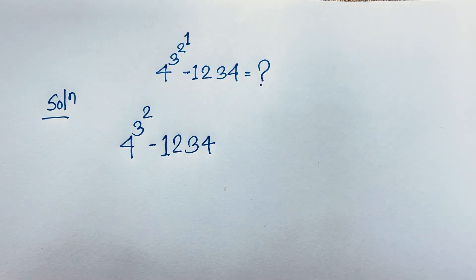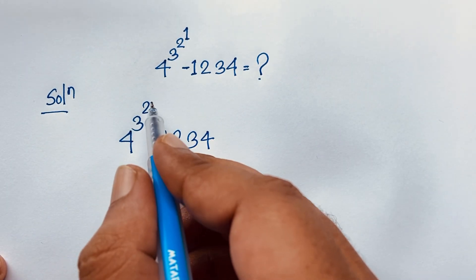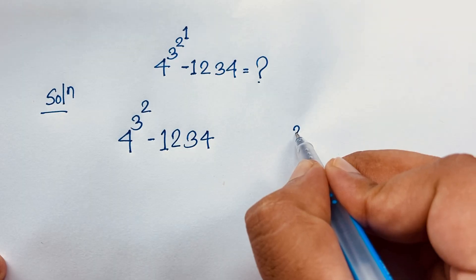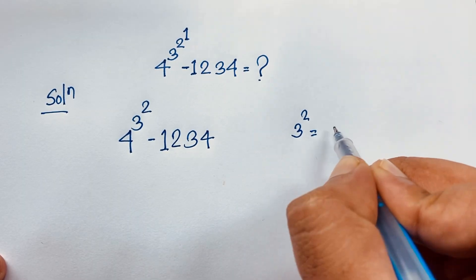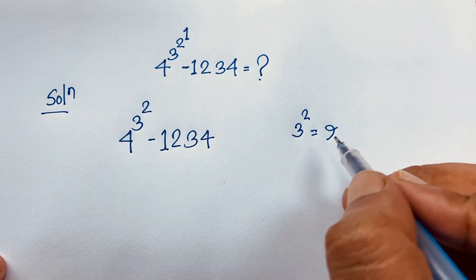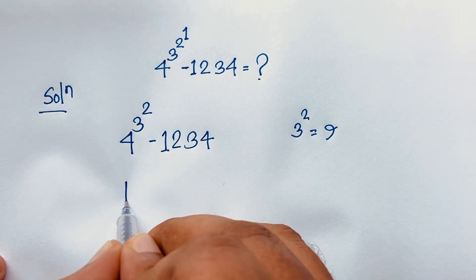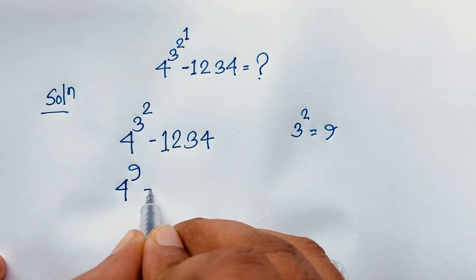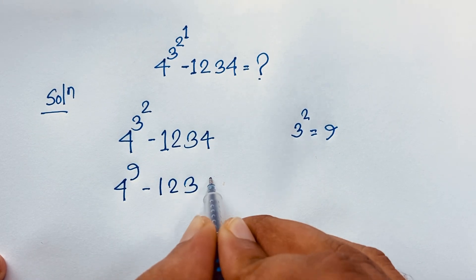Now, at this moment, here is 4 to the power 3, then 3 to the power 2 is equal to what? We know that 3 to the power 2 equals 9. So if I take this case here, it will be 4 to the power 9, minus 1234.